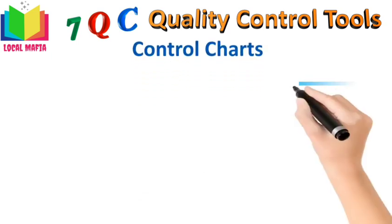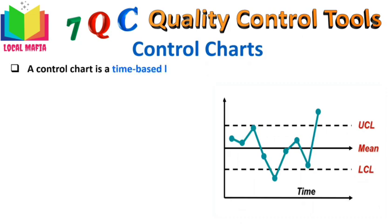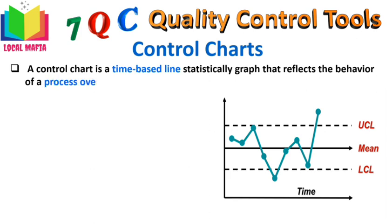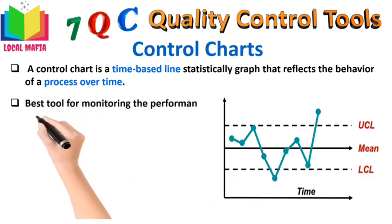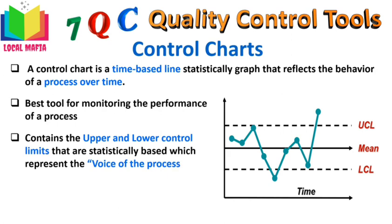Control Charts: Control charts are the best tool for monitoring the performance of a process. A control chart is a time-based statistical graph that reflects the behavior of a process over time, including normal variation and any special cause of variation — all in real time. It is used to determine if the process is within statistical control or going out of control. It contains an upper control limit and a lower control limit that are statistically based and represent the voice of the customer or process. They are also known as Shewhart charts, named after Walter A. Shewhart, or process behavior charts.